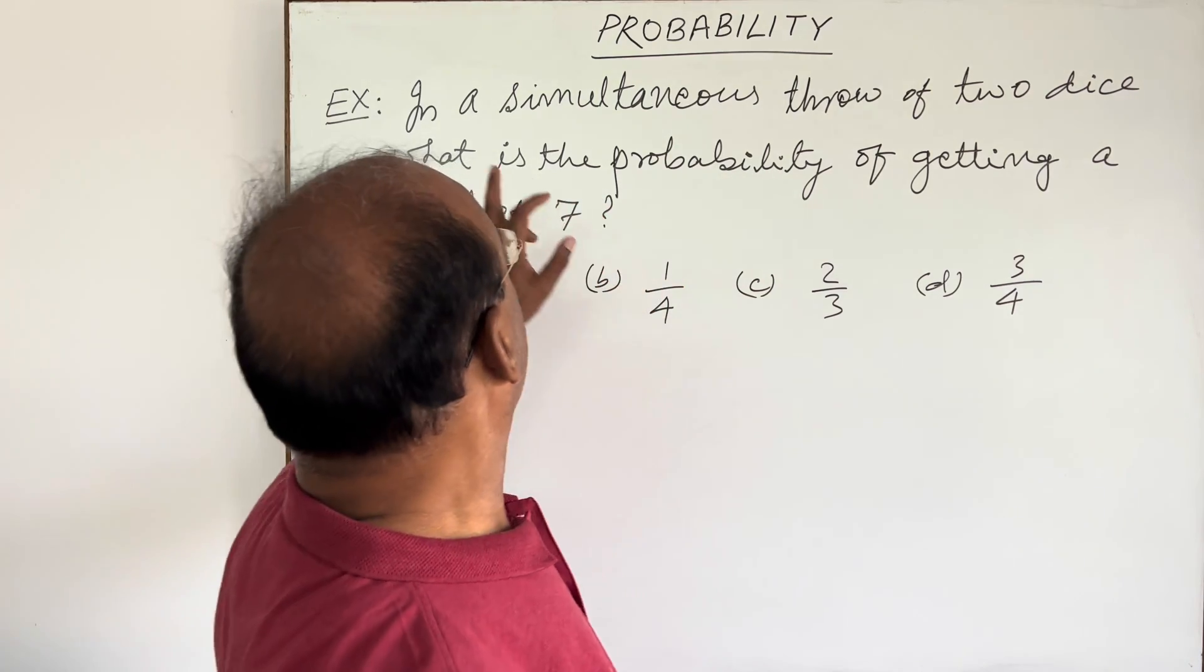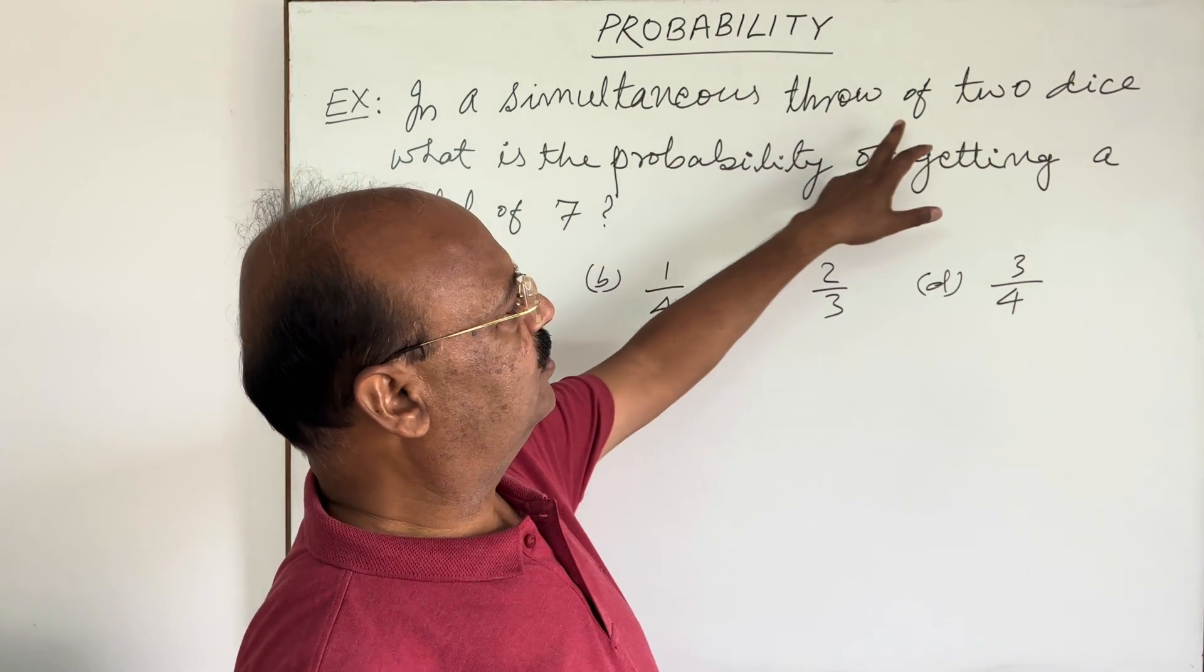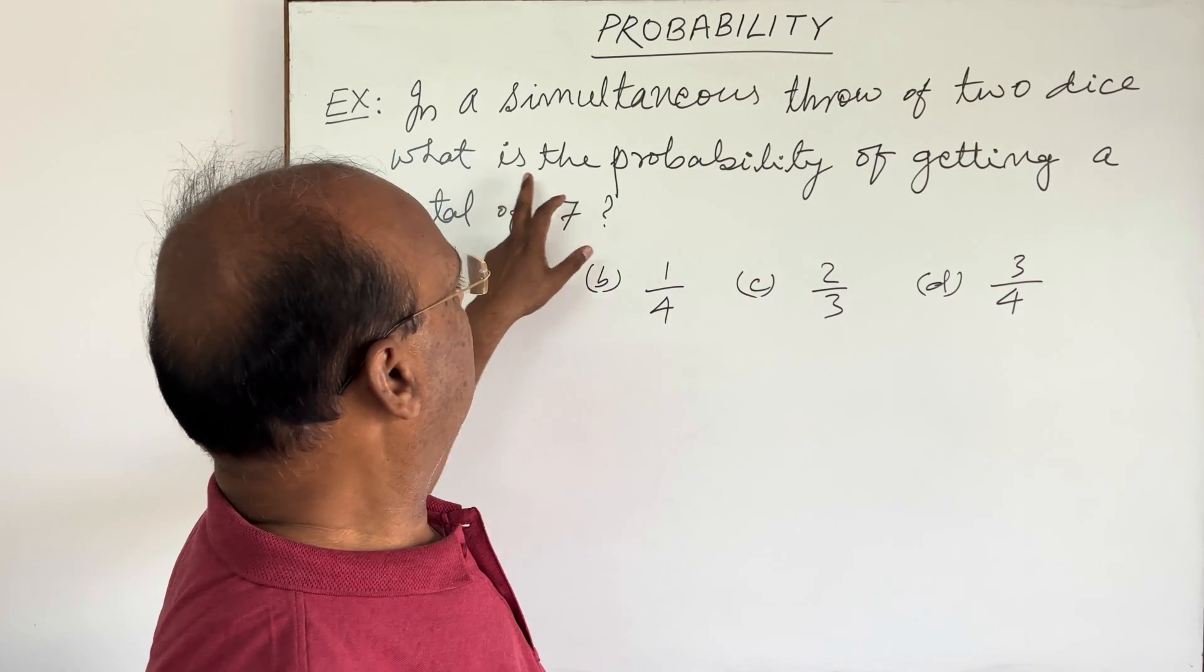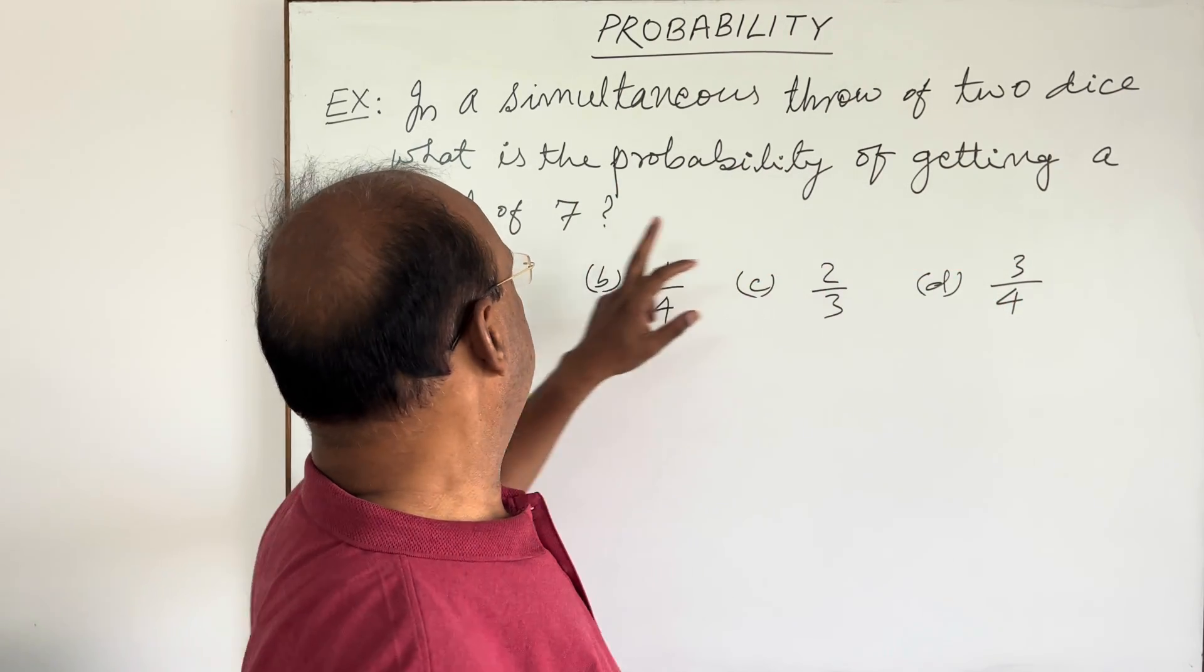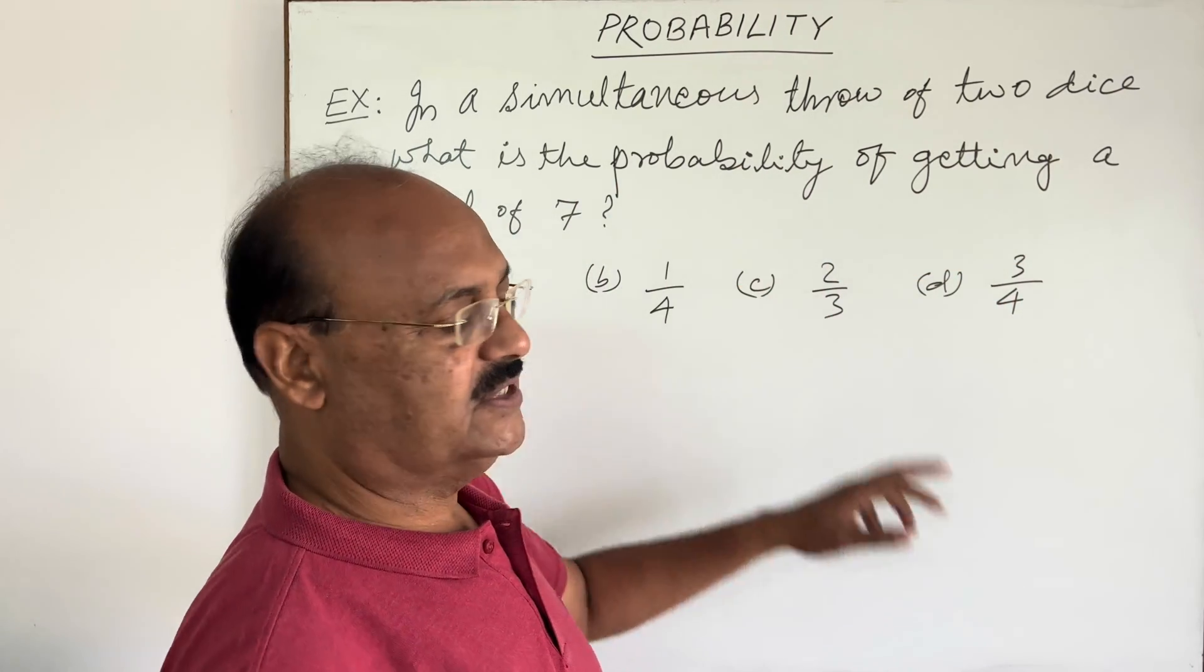Your question is: In a simultaneous throw of two dice, what is the probability of getting a total of seven?